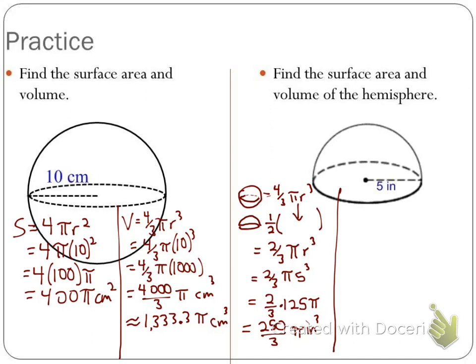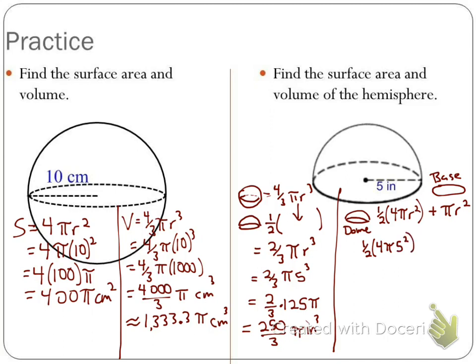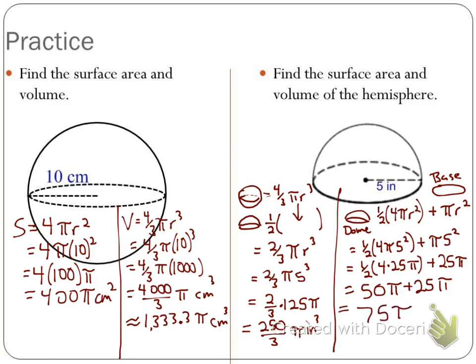For the hemisphere's surface area, we take half the sphere's surface area and add the circular base. That's (1/2)(4πr²) + πr², because we need to include the flat disc at the bottom. With radius 5: (1/2)(4π times 5²) + π times 5² = (1/2)(100π) + 25π = 50π + 25π = 75π inches squared.